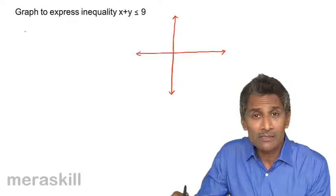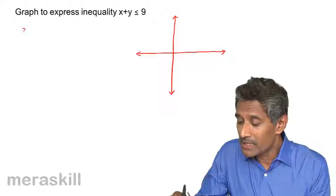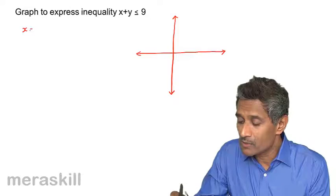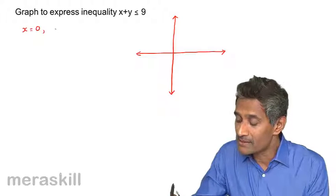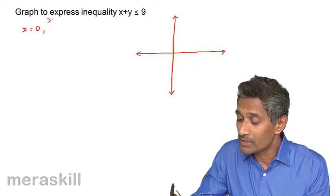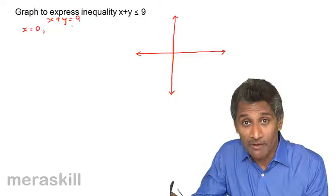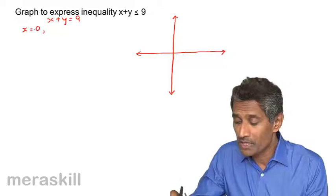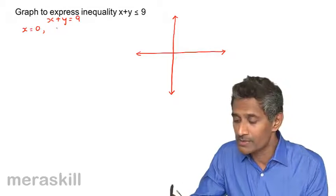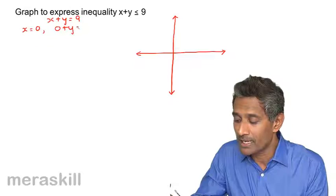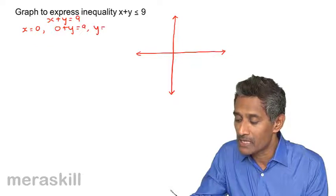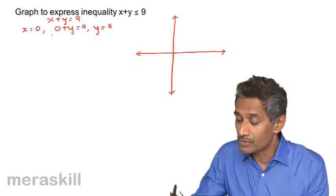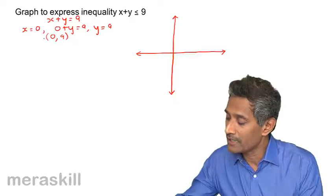So we take x is equal to 0. First we consider x plus y is equal to 9 to find the boundary. Substituting x equals 0, we get 0 plus y equals 9, so y is 9. That means the point 0 comma 9 is on the line.